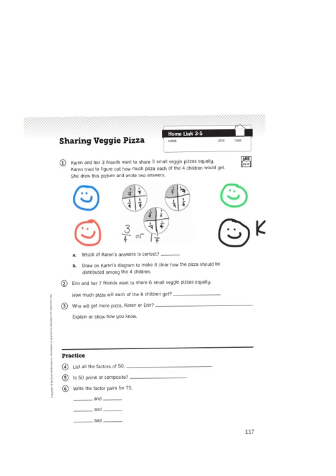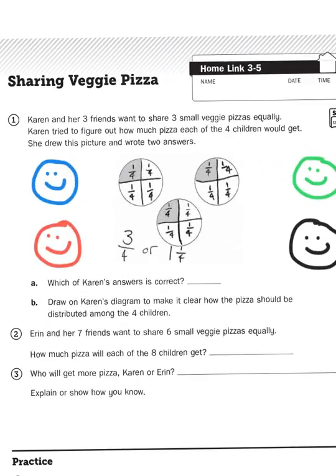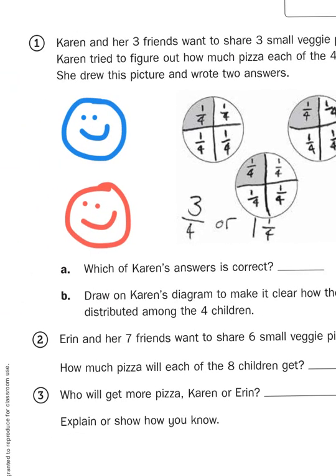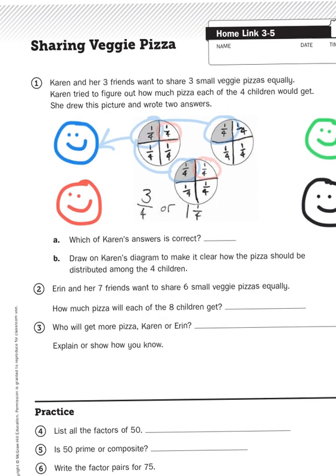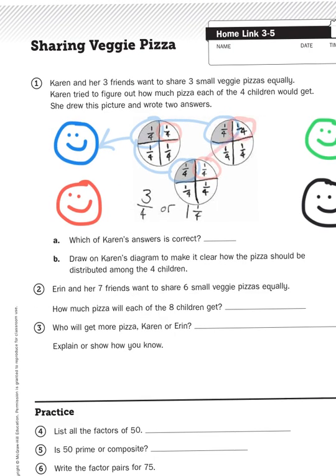We have three pizzas divided into two-fourths, and we have four children. Karen and her three friends equal four. So, how would we divide the pizza? Well, let's say the friend in blue right here, that person would get this slice here, along with this slice here, and this slice here. So those three slices together would go to this friend. Now, on the next pizza, one, two, three, those three slices would all go to the second friend, in red.